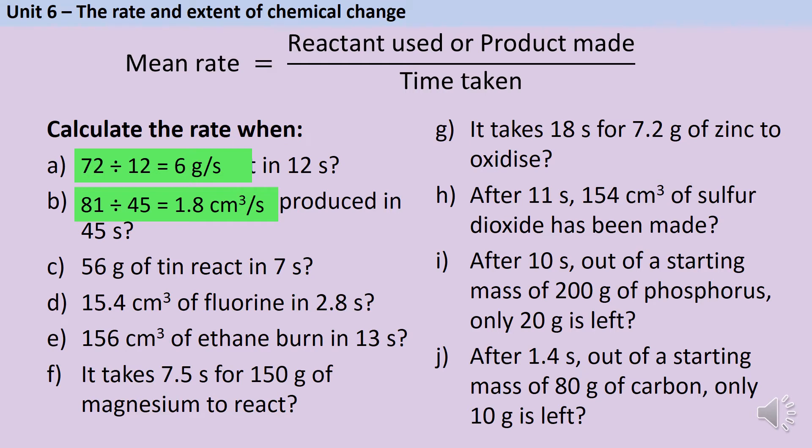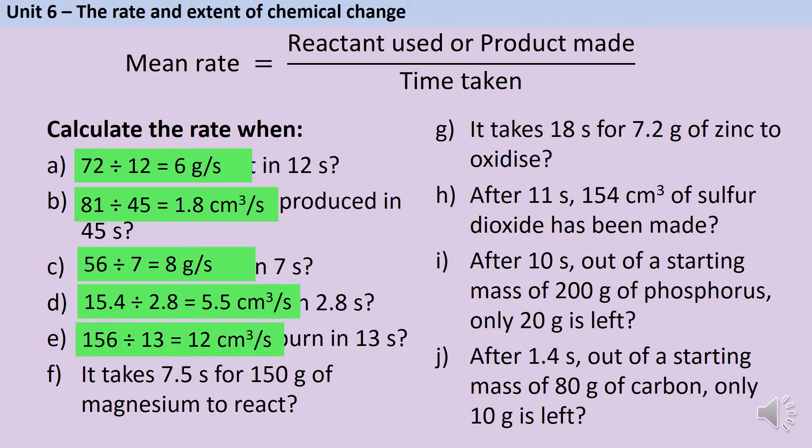Pause the video now and see if you can have a go at the remaining 8 questions. Okay, so if 56 grams of tin reacts in 7 seconds, that's a rate of 8 grams per second. If 15.4 centimetres cubed of fluorine reacts in 2.8 seconds, that's a rate of 5.5 centimetres cubed per second. If 156 centimetres cubed of ethane burns in 13 seconds, that's a rate of 12 centimetres cubed per second. If it takes 7.5 seconds for 150 grams of magnesium to react, that's a rate of 20 grams per second.